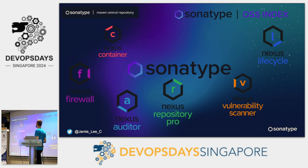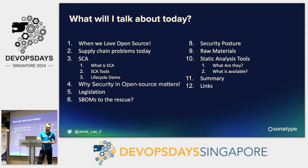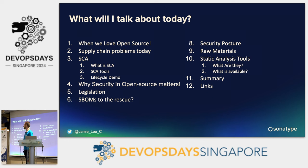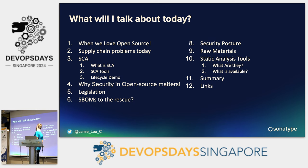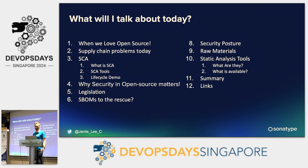All our colleagues are at KubeCon in Paris. So what am I talking about today? First, we're going to talk about why we love open source, some of the supply chain problems we have today with consuming mass amounts of open source. I'll talk about what SCA is — software composition analysis — why security matters, a little bit about SBOMs, and then what raw materials are.